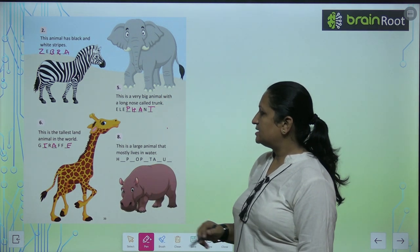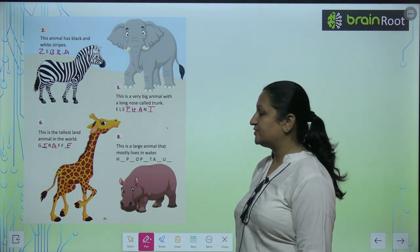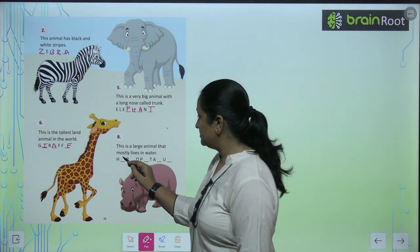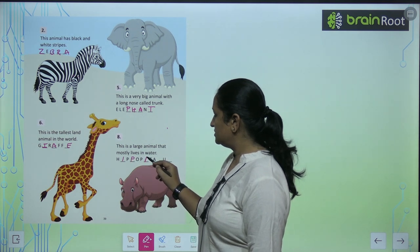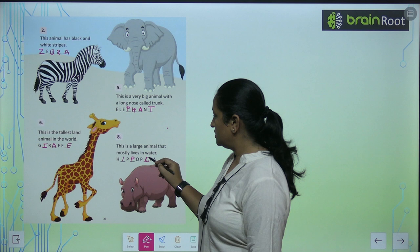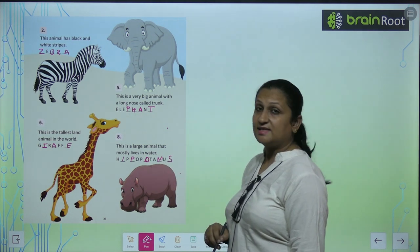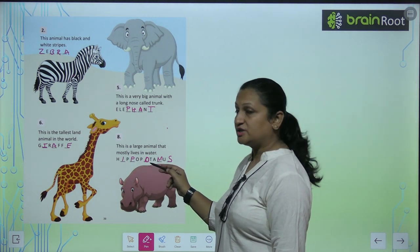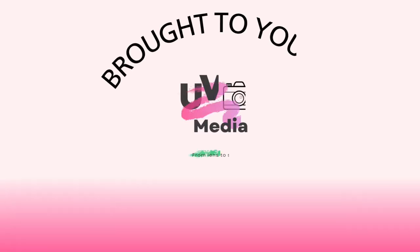This is a large animal that mostly lives in water. What is its name? Its name is hippopotamus. This is the spelling: H-I-P-P-O, hippo, P-O-T, pot, A-M-U-S, hippopotamus. This is the largest animal in the world. Thank you.